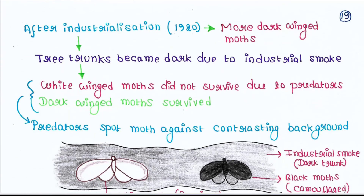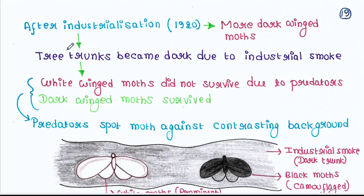However, after industrialization — that is, in 1920 — there were more dark-winged moths in the same area. That is, the proportion was reversed. Why did this happen?